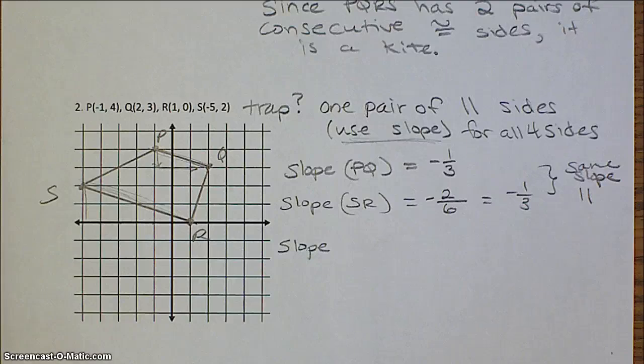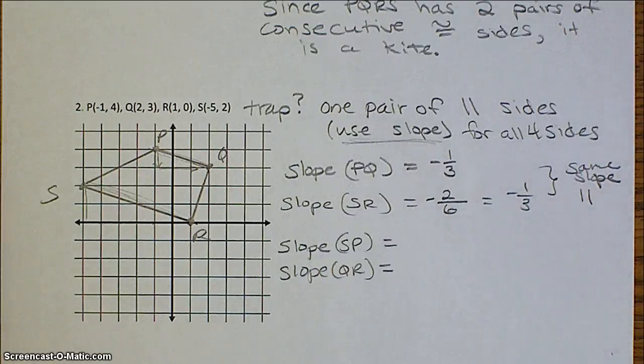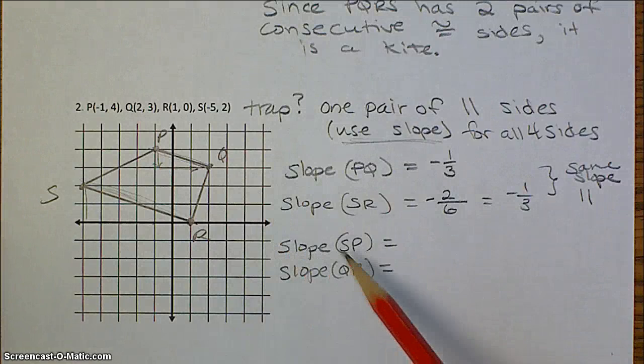Then we're going to do the same thing for the other two sides. And hopefully when we do these slopes, they do not come out the same, because a trapezoid should only have one pair of parallel sides.